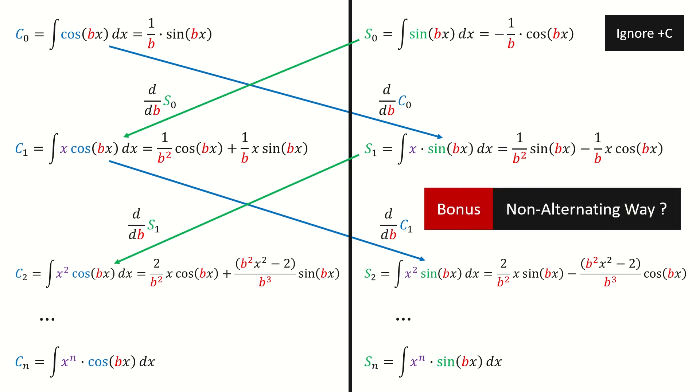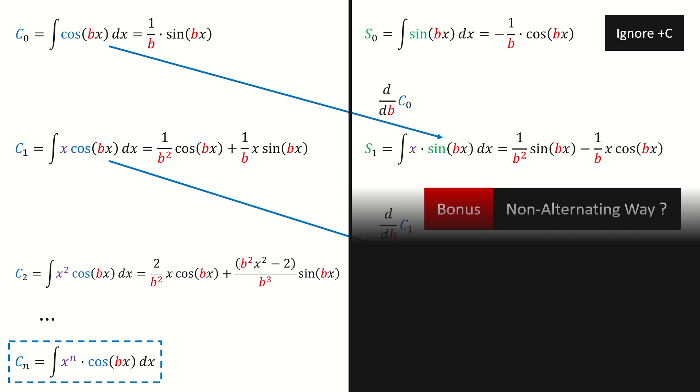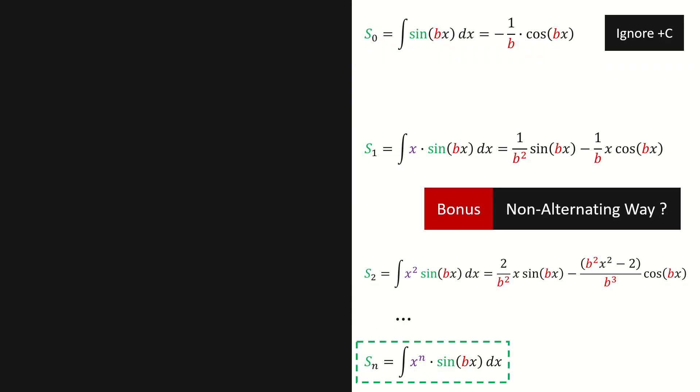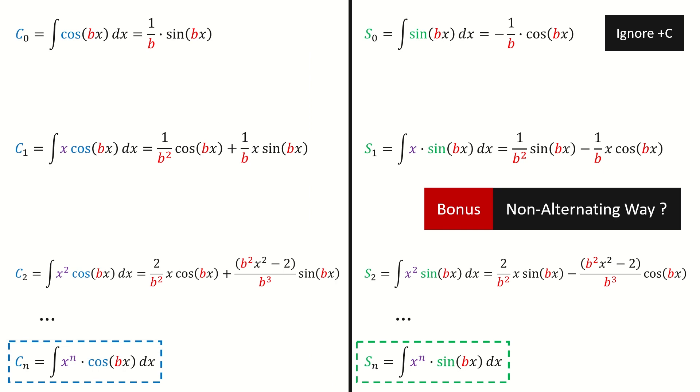Here is a bonus question. Can we solve them by using non-alternating method? For example, if we look at cn, we want to solve it without using the result from those sine integrals. Similarly, for sn, we want to solve it without using the result from those cosine integrals. By the way, we are not allowed to do integrations. You can try it, and I will give the solution in the next episode. And don't forget to subscribe my channel and give a like.